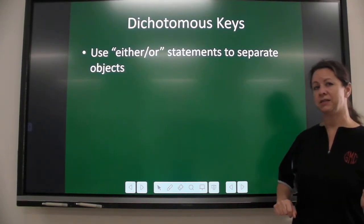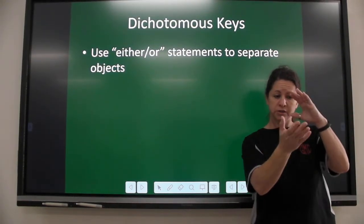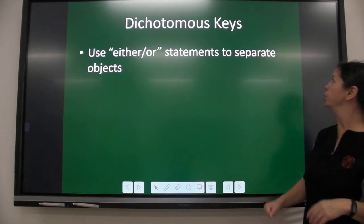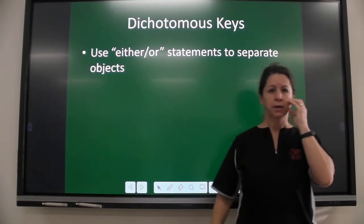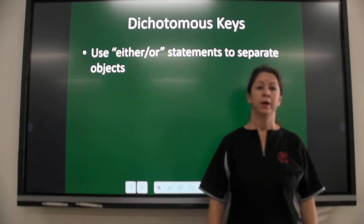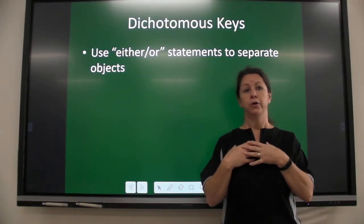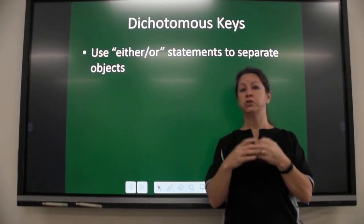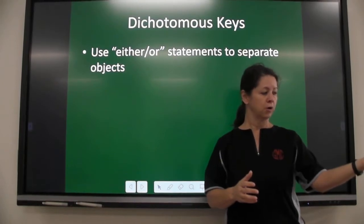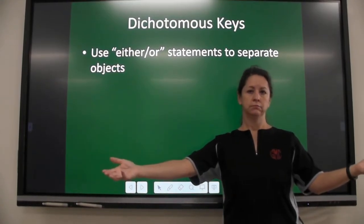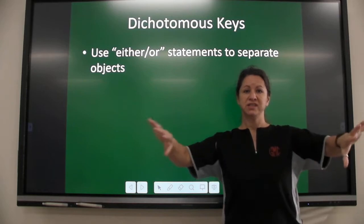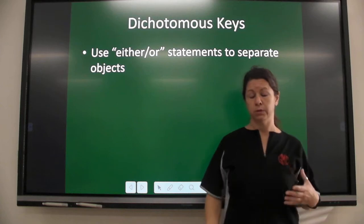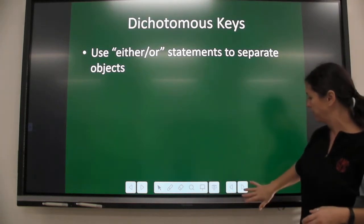A dichotomous key is a system of steps that use either/or statements to separate objects. So if we were talking about our classroom and I wanted to create a dichotomous key of my students, it'd be very easy to start by saying the student is either a girl or a boy. There are only two choices — we separated it into two. That's what we're talking about with either/or statements.